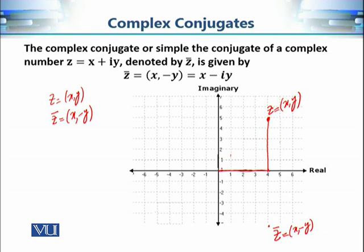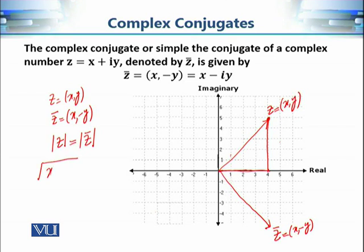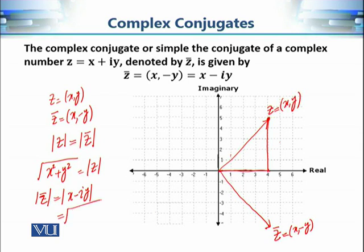It is a simple observation that the distance from the origin to z equals the distance from the origin to its conjugate — that is, |z| = |z̄|. Algebraically: since |z| = √(x² + y²) and |z̄| = √(x² + (−y)²) = √(x² + y²), both moduli are equal.